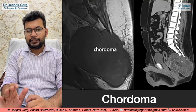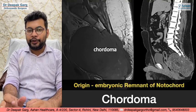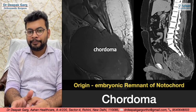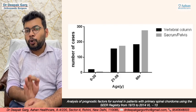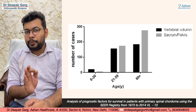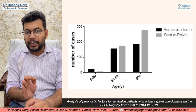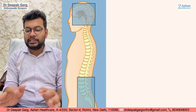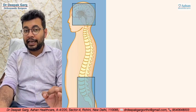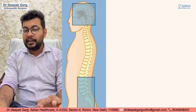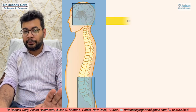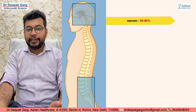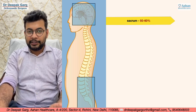Chordoma arises from the embryonic remnant of the notochord. The most common age group is older adults and the most common site is the axial skeleton, out of which the most common is the sacrum, which is approximately 50 to 60%.